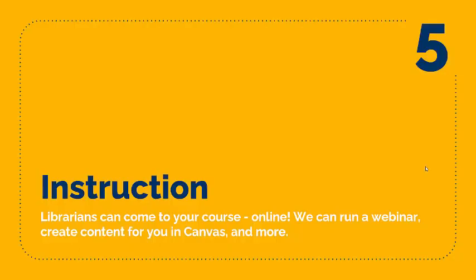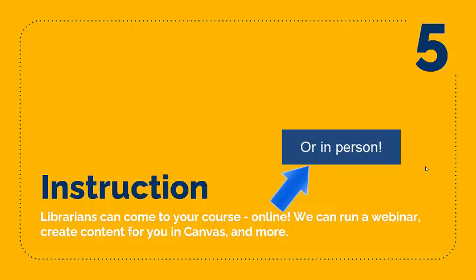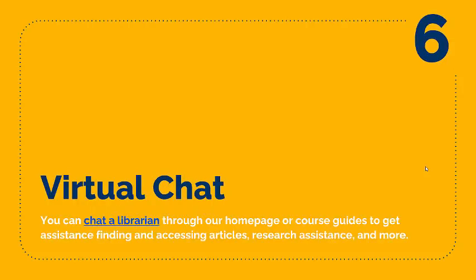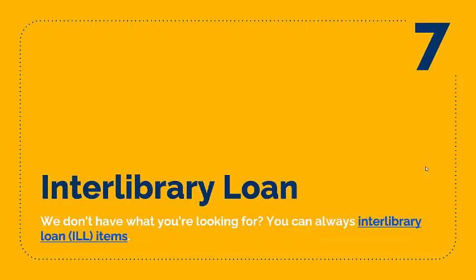We can do instruction online or in person, depending on the librarian, where we can help with information literacy needs as well as research and more. Be sure to contact your liaison librarian to know what they can offer in terms of library instruction. We also have a virtual chat where you can chat with a live librarian through our homepage or course guides, anywhere where you see a chat. They can help you with accessing articles, research assistance, and more. We also have an interlibrary loan system — if we don't have what you're looking for, we can always get it through interlibrary loan.